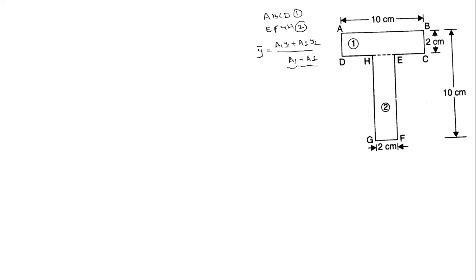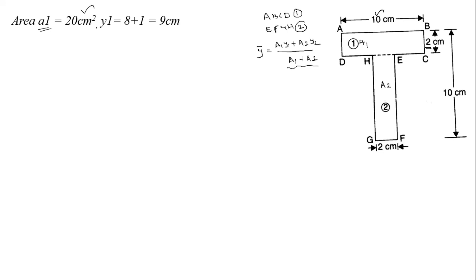A1 is the area of the first rectangle, equal to L×B. The length is 10 cm and the depth is 2 cm, so A1 = 10×2 = 20 cm².